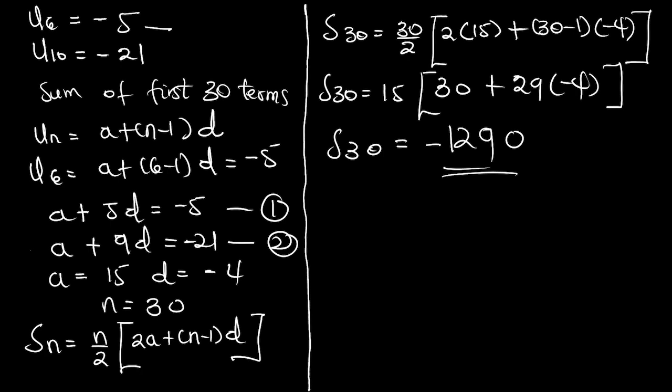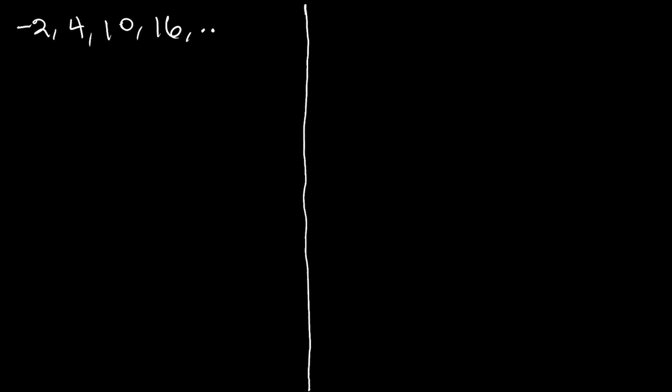Let's try the final example, then we say goodbye to this video. You can pause the video and try your hand at it. We are supposed to find an expression for the nth term of the sequence negative 2, 4, 10, 16, and so on. After finding the nth term, we use this formula to find the 15th term of the sequence and the sum of the first 15 terms — so this is basically three questions.